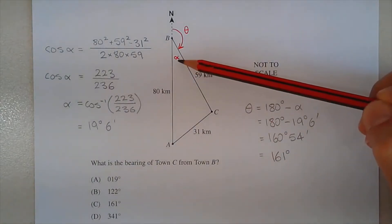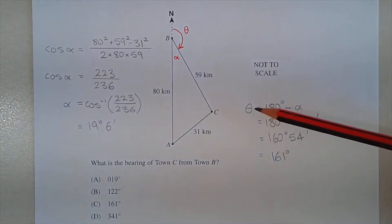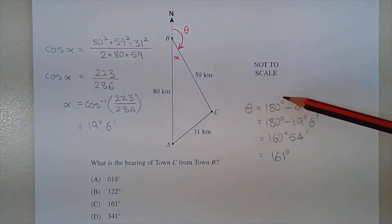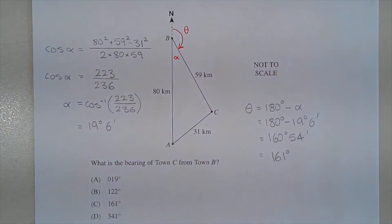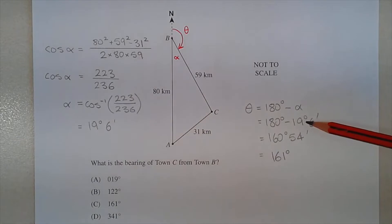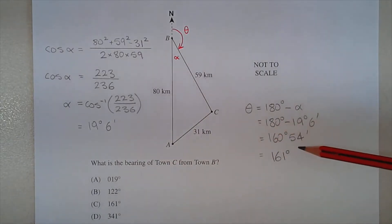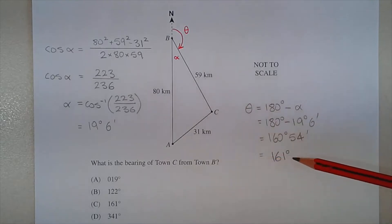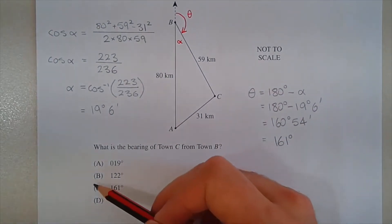Now that we have alpha, angle theta equals 180 degrees minus alpha. So 180 minus 19 degrees 6 minutes equals 160 degrees 54 minutes, which rounded to the nearest degree is 161 degrees. The answer is option C.